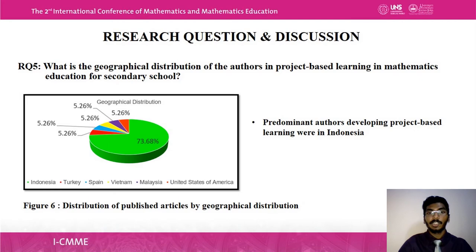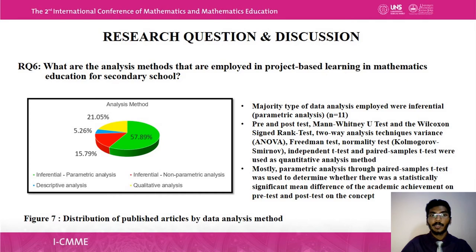The fifth research question is: what is the geographical distribution of authors in project-based learning in mathematics education for secondary school? Based on the analysis, researchers from Indonesia, Turkey, Spain, Vietnam, Malaysia, and the USA conducted research on this topic. The predominant authors developing project-based learning were from Indonesia.